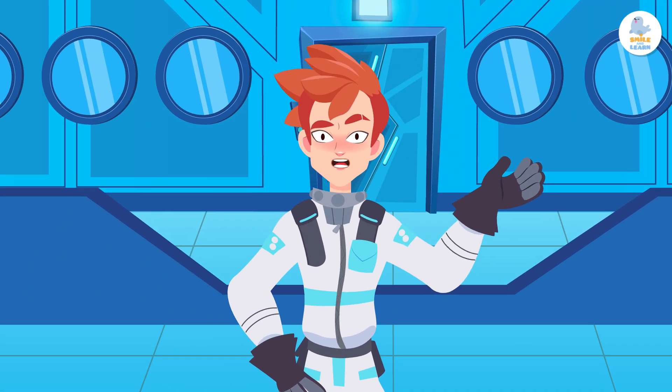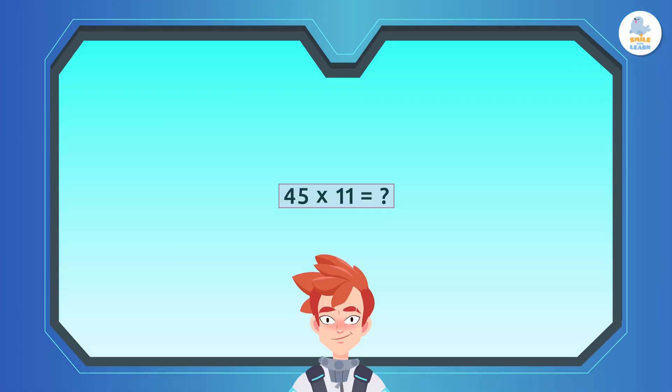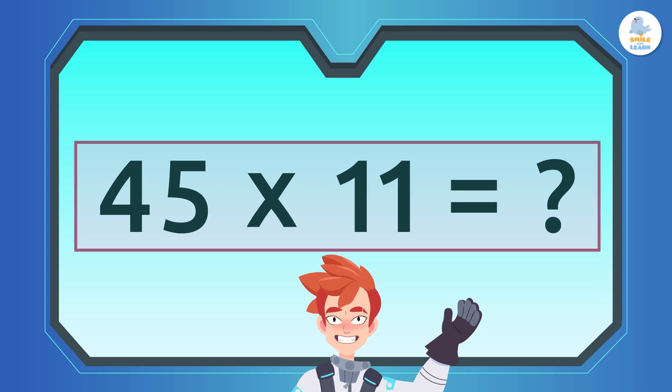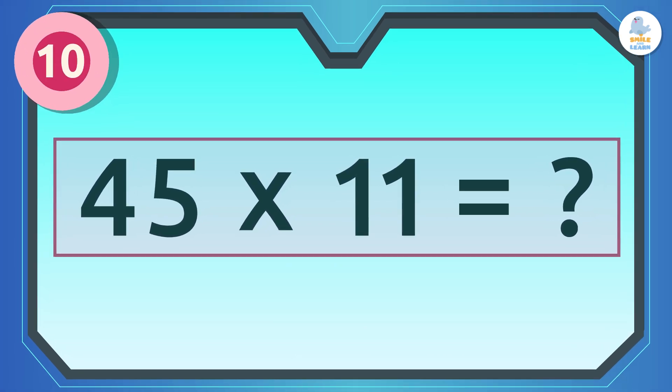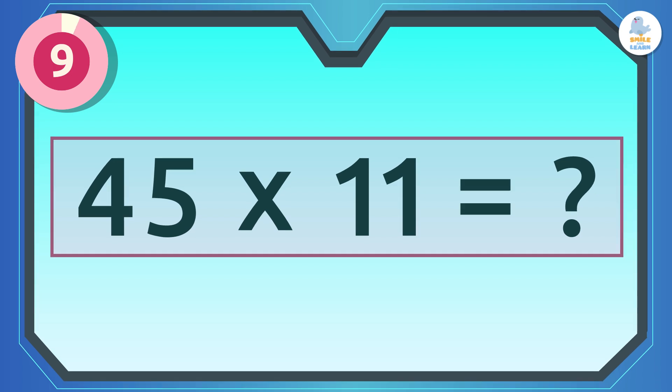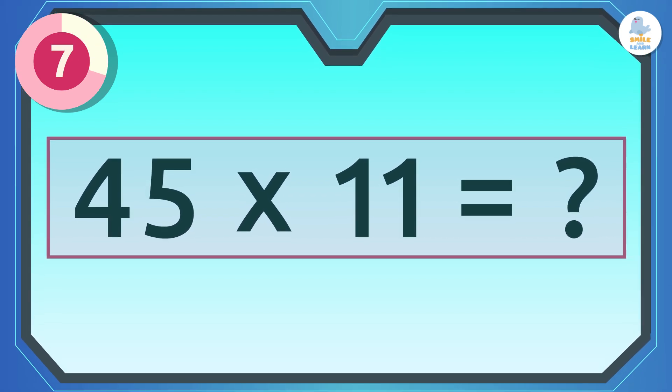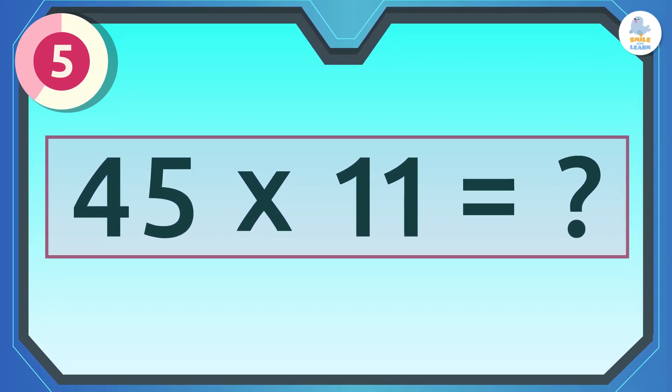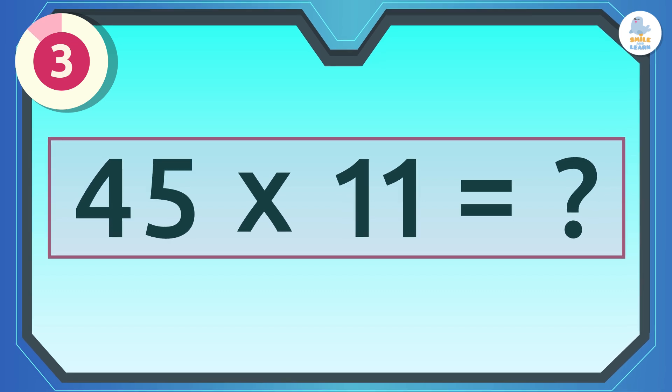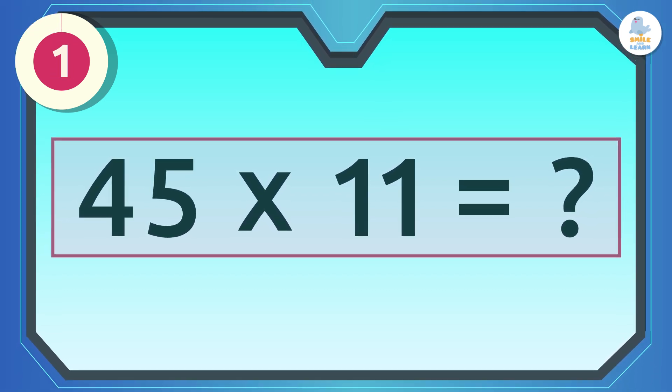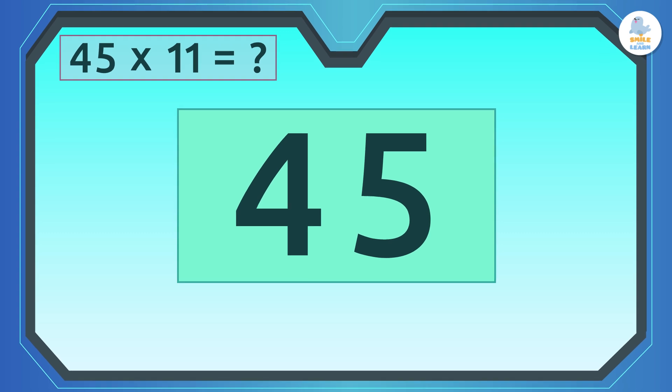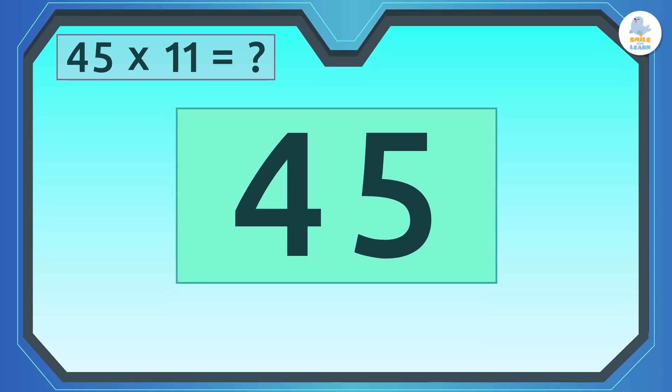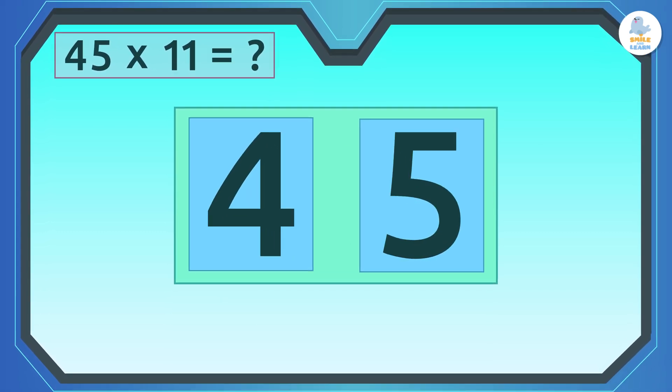Now it's your turn. How would you quickly calculate 45 times 11? Remember the trick? Just like before, we have to separate the two digits, 4 and 5.